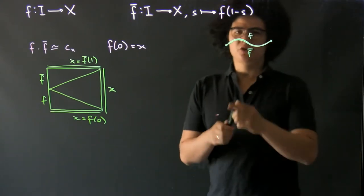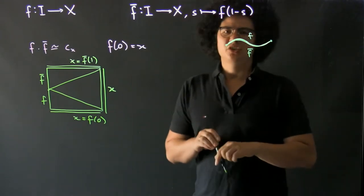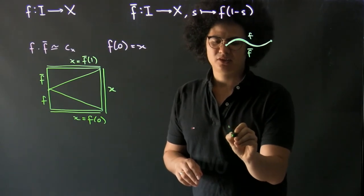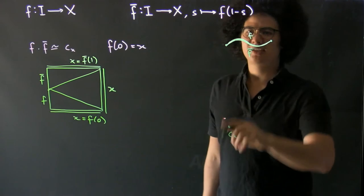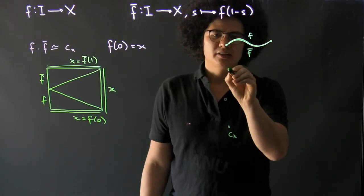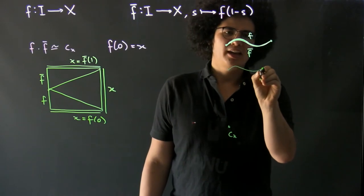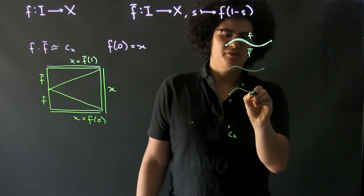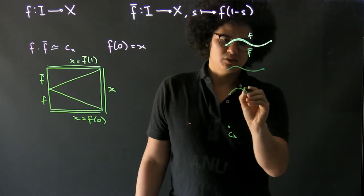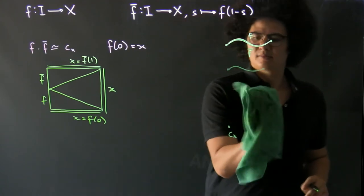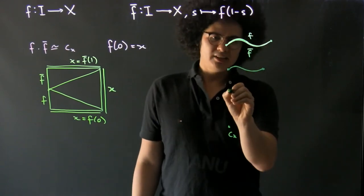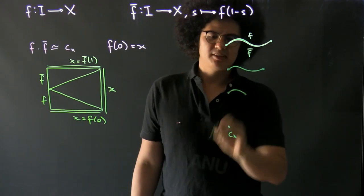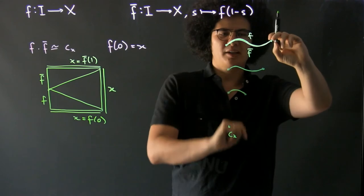At time 0 it's just cx, and at time 1 it's f composed with f-bar. In between, we do some of f and then some of f-bar. Here we do less of f, and then less of f-bar. We're slowly taking this point and pulling it back through.